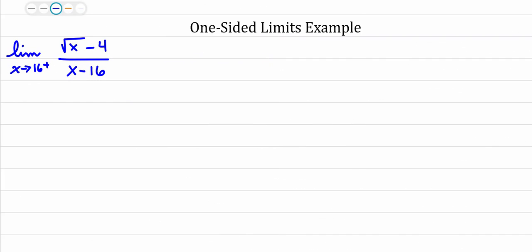Let's say you want to find this limit as x approaches 16 from the right, what the plus means. And you cannot plug in 16 because that would make the denominator, which we care about, zero.